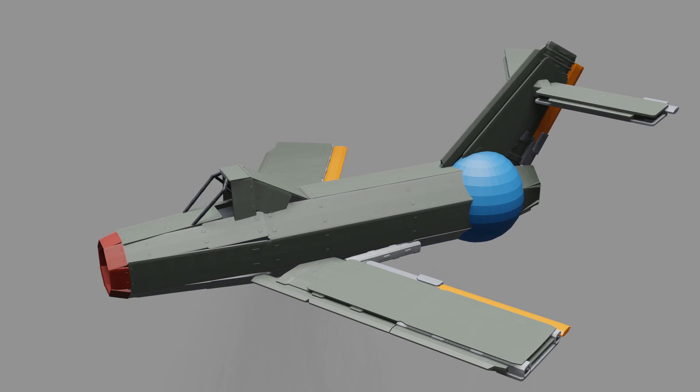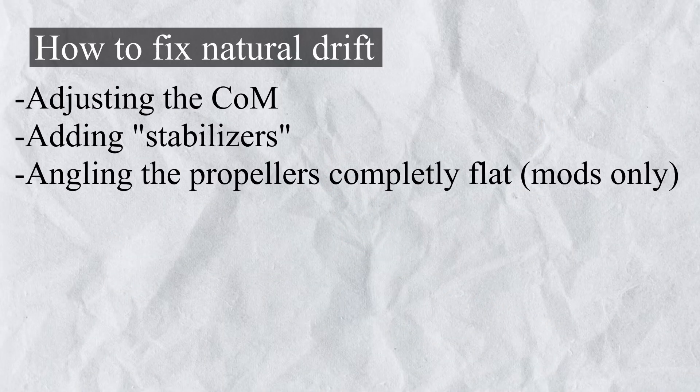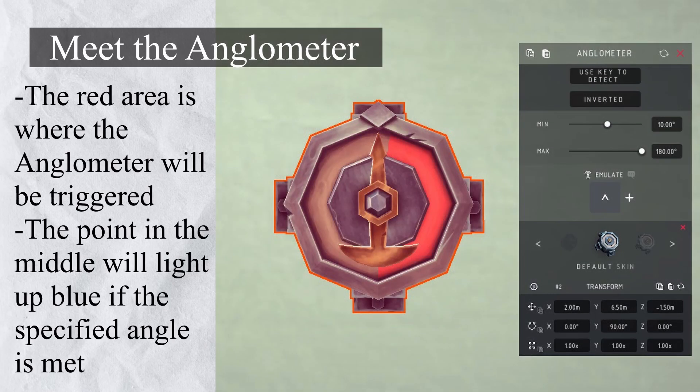We can fix issues with our center of mass by simply placing mass blocks in certain places. But what we cannot fix are imperfections on our rudder, aileron, and elevator. To fix those we would need mods. But since this is a vanilla build, we can't do that. Instead, we will be using rotational sensors.